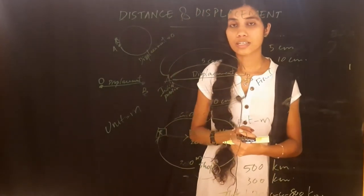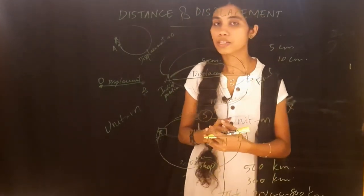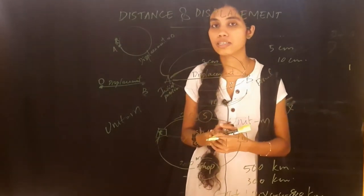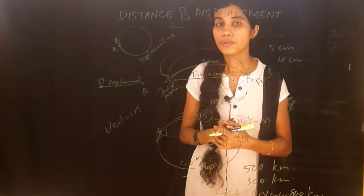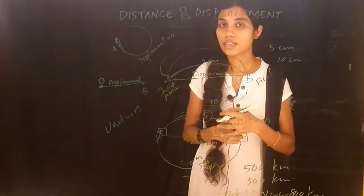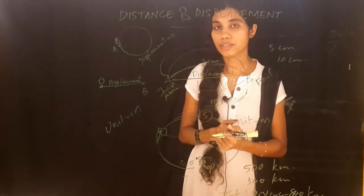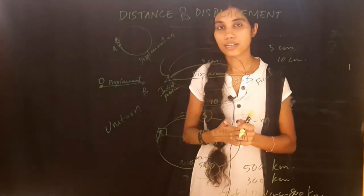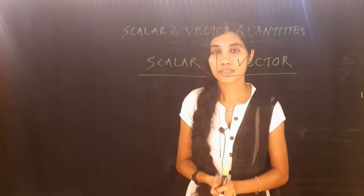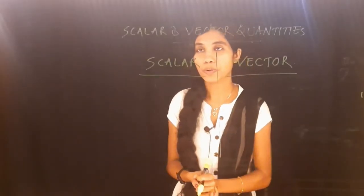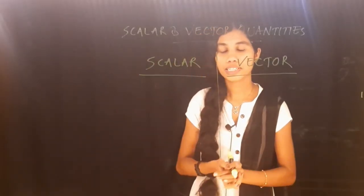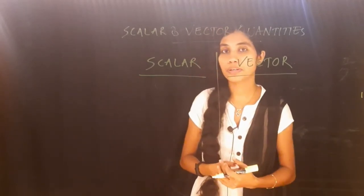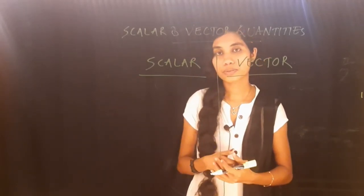Distance is a scalar quantity — it has magnitude only. Displacement is a vector quantity — it has both magnitude and direction. The next topic is scalar and vector quantities, which relates to distance and displacement.